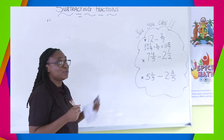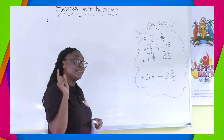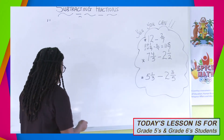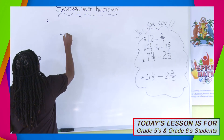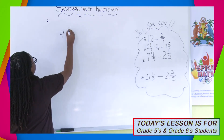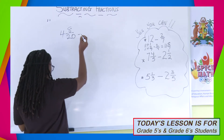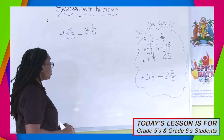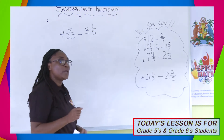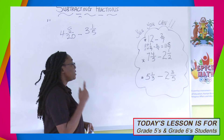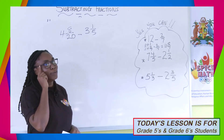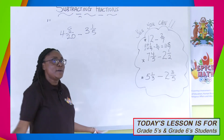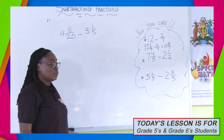Now, we're going to look at two mixed numbers being subtracted. Our first question will be 4 and 8 over 20, and we're going to take away 3 and 1 fifth. Remember, if you have trouble, think a little money — this is like $4.00 and cents, and I'm taking away $3.00.